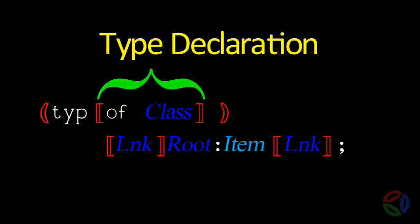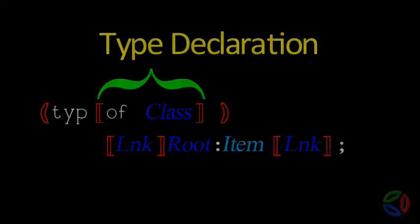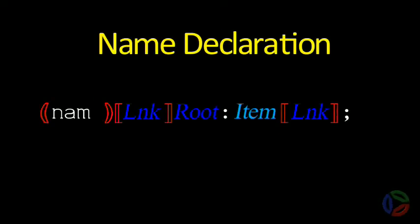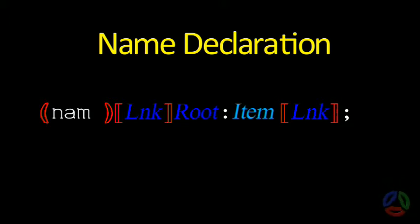Otherwise, new types lose most of the operations, if any, that are defined on their base types. If you want to abbreviate a type specification for the purpose of simplifying further declarations without losing the operations available on their base types, just use the keyword NAM instead of TYP. The keyword NAM is simply a convenience to consolidate type information into an identifier — it does not create a new type per se.